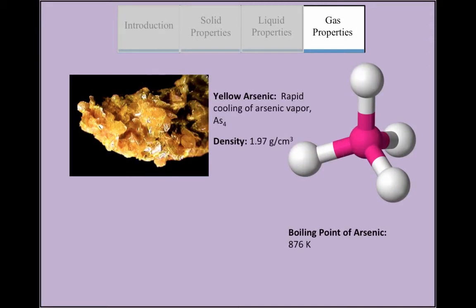Solid yellow arsenic, another allotrope of arsenic, is produced by the rapid cooling of arsenic vapor. Yellow arsenic is soft and waxy with a tetrahedral structure. This unstable allotrope, being molecular, is the most volatile, least dense, and most toxic.